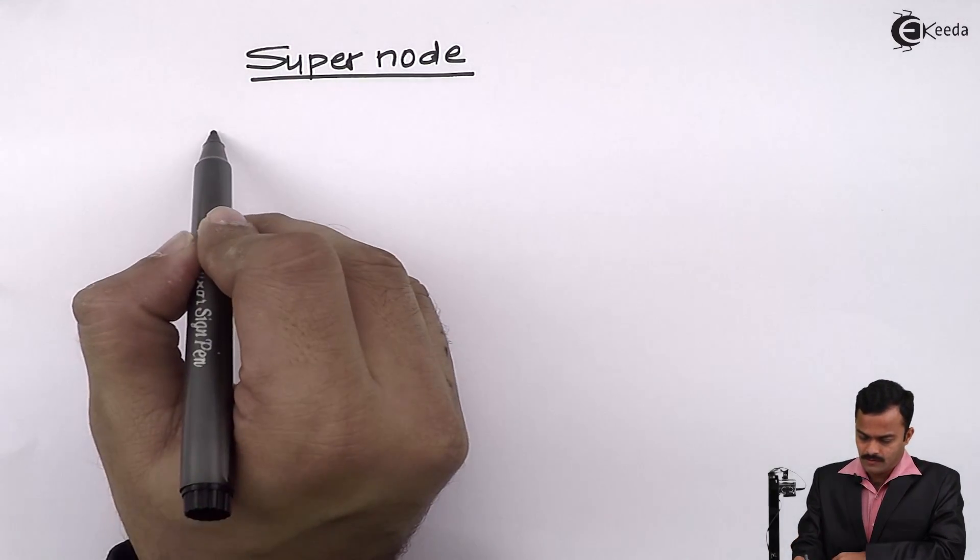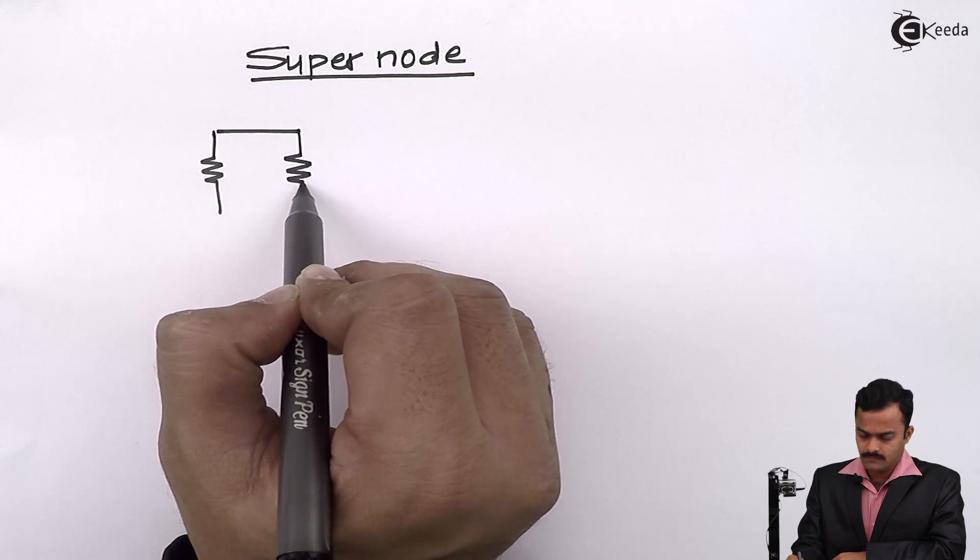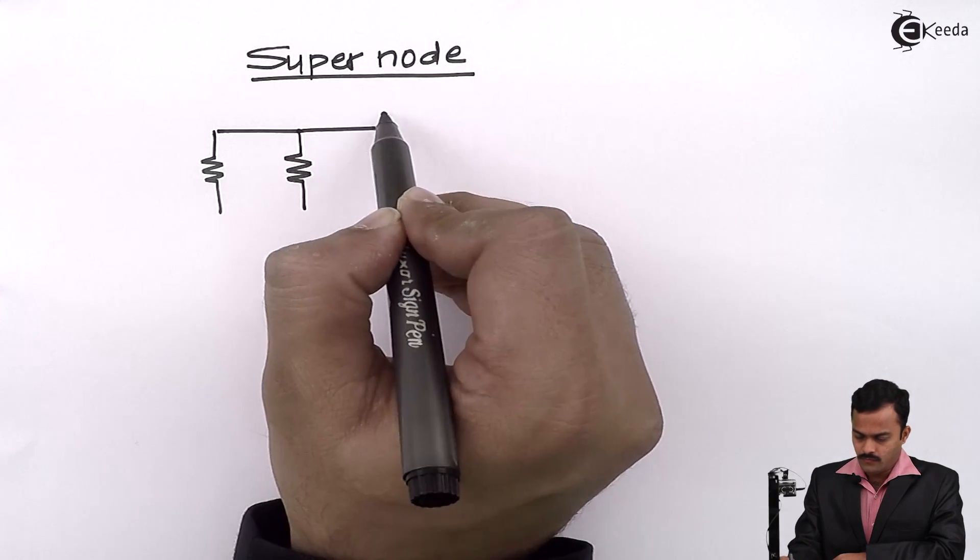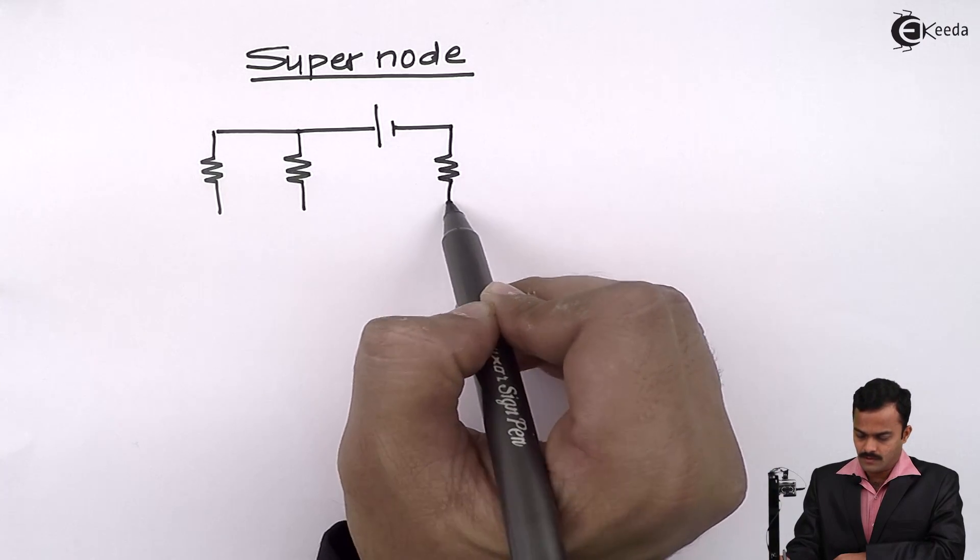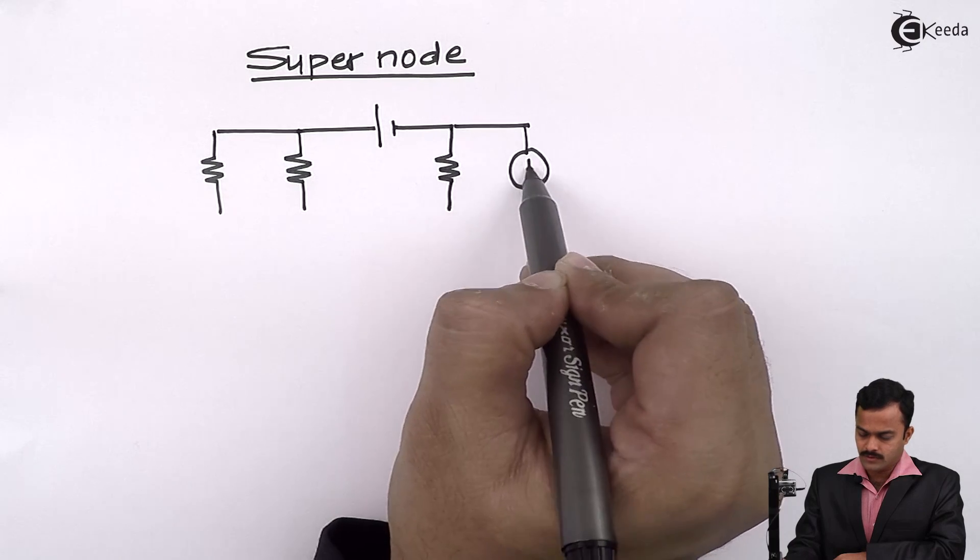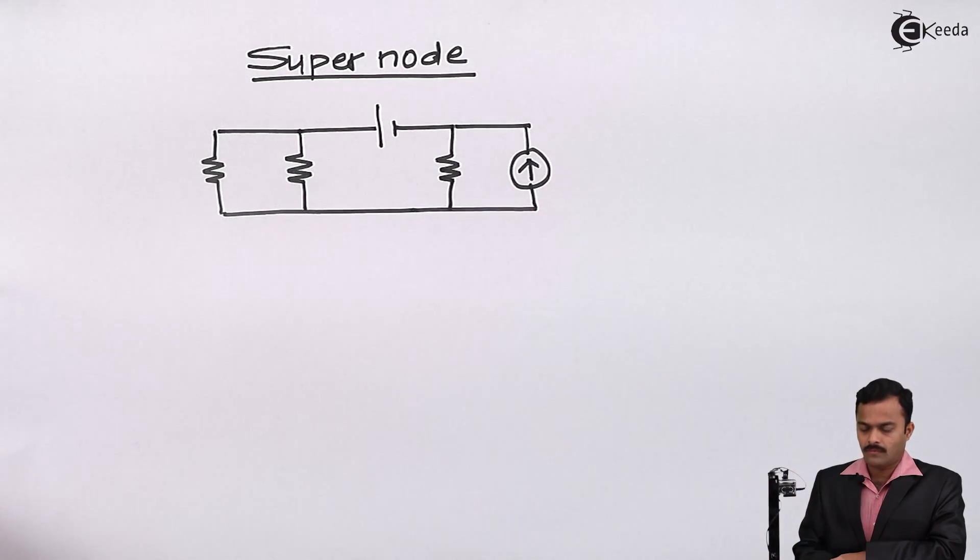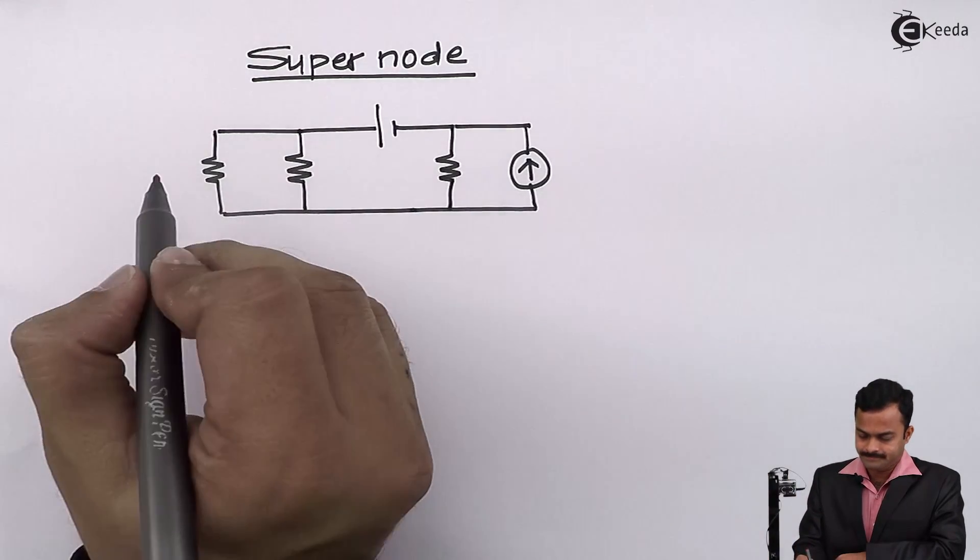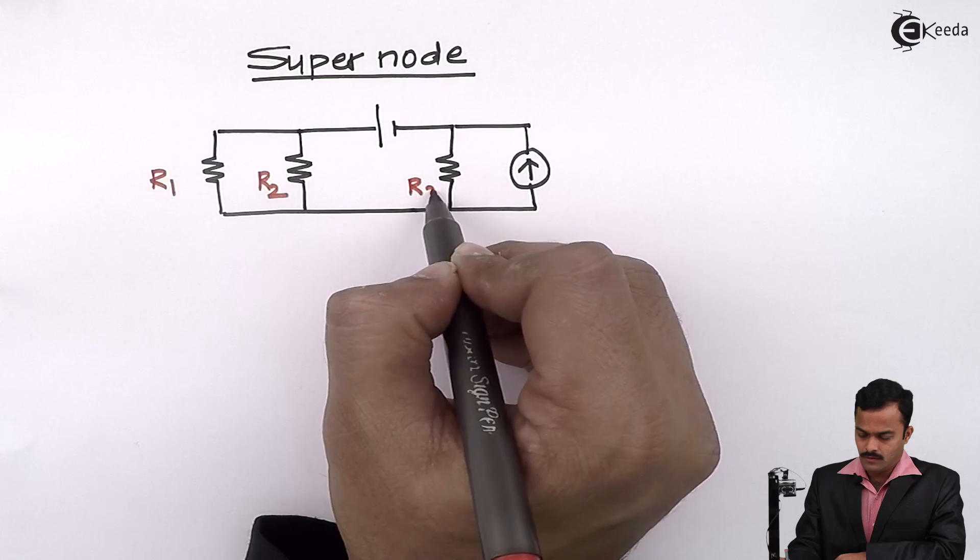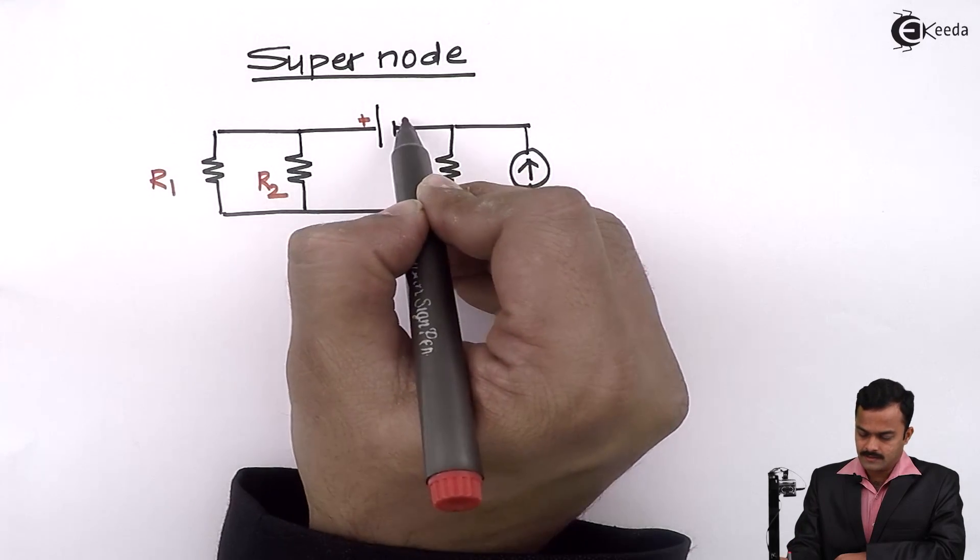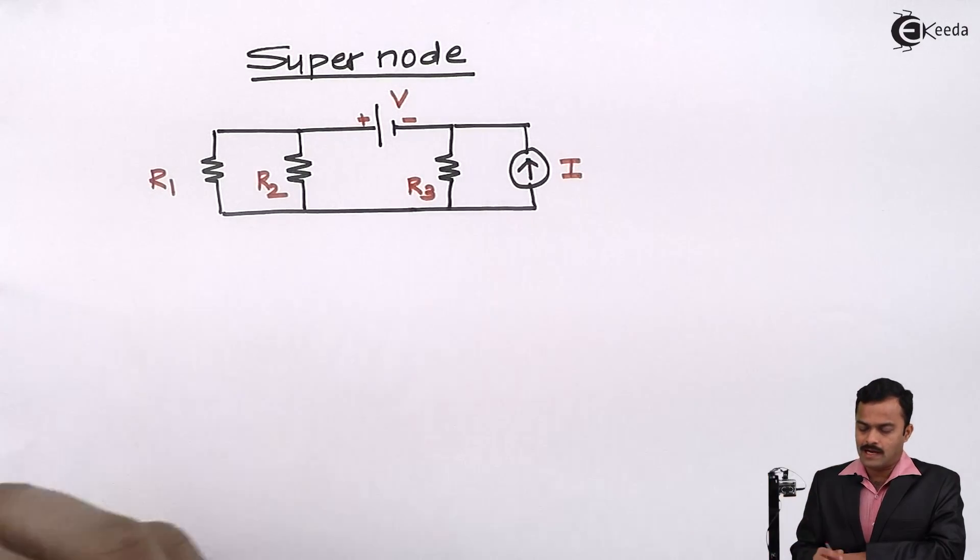I will consider the circuit having resistances connected in parallel and voltage source connected between two nodes, and then I am considering a current source with a resistance parallel to it. I will give you the values R1, R2, R3. Let's take this as voltage source of V and current source of I ampere.